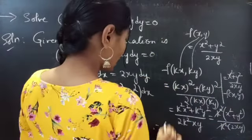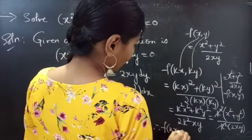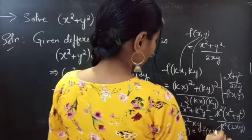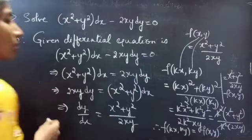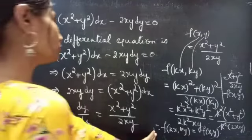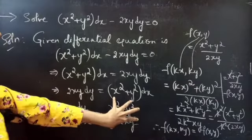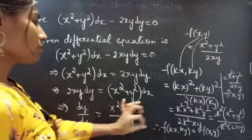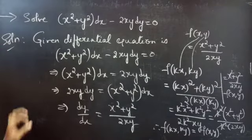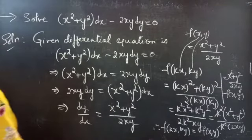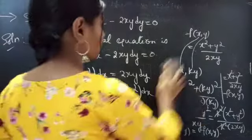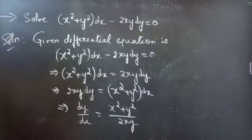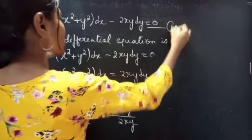Therefore, f(kx, ky) equals f(x, y). This shows that the function is homogeneous. Since the function is homogeneous, we call this a homogeneous differential equation. Let's consider the given equation as equation 1.